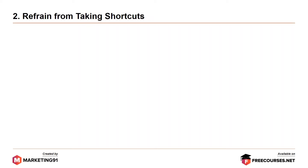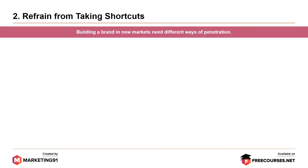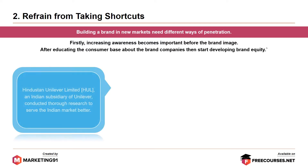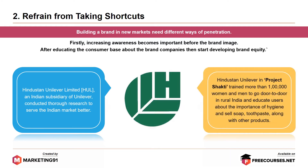Moving on to the second commandment: refrain from taking shortcuts. Building a brand in new markets needs different ways of penetration. Increasing awareness becomes important before the brand image. After educating the consumer base about the brand, companies then start developing brand equity. The case here is HUL — Hindustan Unilever Limited, an Indian subsidiary of Unilever. Hindustan Unilever's Project Shakti trained more than 100,000 women and men to go door-to-door in rural India to educate users about the importance of hygiene and sell soap, toothpaste, and other Unilever products.